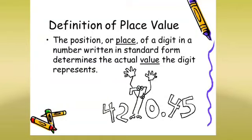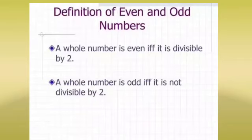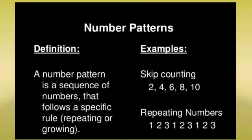A whole number is even if it is divisible by two. A whole number is odd if it is not divisible by two. Let's talk about number patterns.